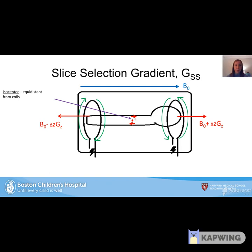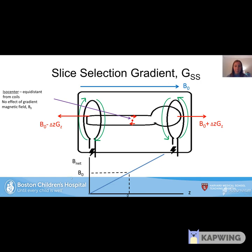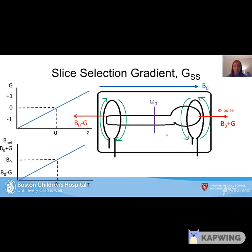At a point equidistant between the two gradient coils — the isocenter — there is no gradient effect, so protons see only B-naught and precess at omega-naught. B-naught as a function of z changes linearly. Protons at positions away from isocenter see different field strengths and precess at different frequencies. We can select a slice by sending an RF pulse at omega-naught and receiving signal at omega-naught. The receiver coil receives signals at different frequencies, enabling selection of different slice locations.